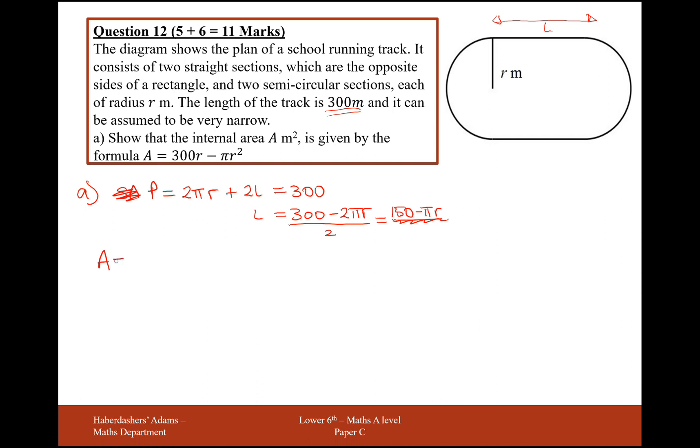So now working out the area of the internal space in this track here. We're going to get two semicircles, so that will form a circle. So it's going to be πr squared, add on to the area inside here. So this is going to be from the length down from here to here, times by L. So 2rL, base times height, effectively, inside that track.